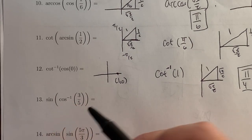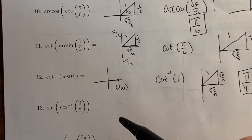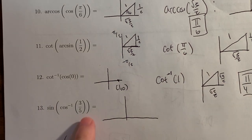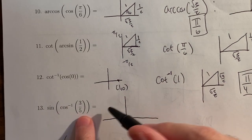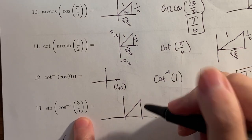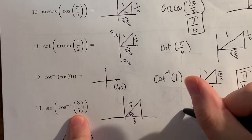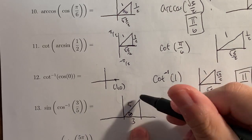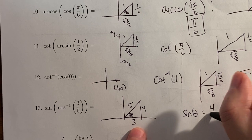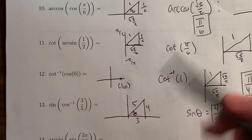For sin(arccos(3/5)): the inverse is on the inside. Inverse cosine lives between 0 and pi; since 3/5 is positive, we're in the first quadrant. Cosine is adjacent over hypotenuse, so adjacent is 3, hypotenuse is 5. This is a special 3-4-5 triangle, so the opposite side is 4. Sine of this angle is opposite over hypotenuse: 4 over 5. The answer is 4/5.